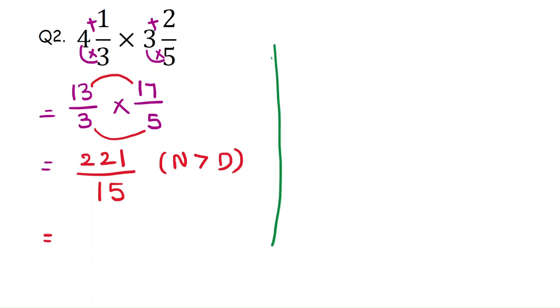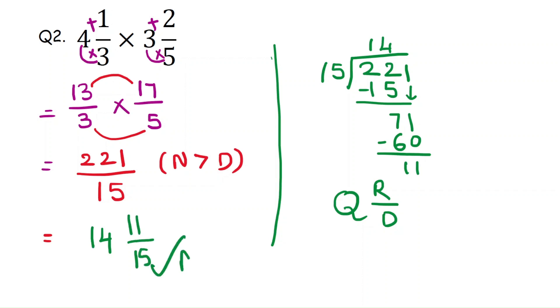Divide 221 by 15. 15 ones are 15. So 22 minus 15 is 7 and you need to down the 1: 71. 15 times 4 is 60. 71 minus 60 is 11. So how you will write the mixed fraction? Quotient and remainder by divisor. Then that will be 14 and 11 by 15 is the answer.